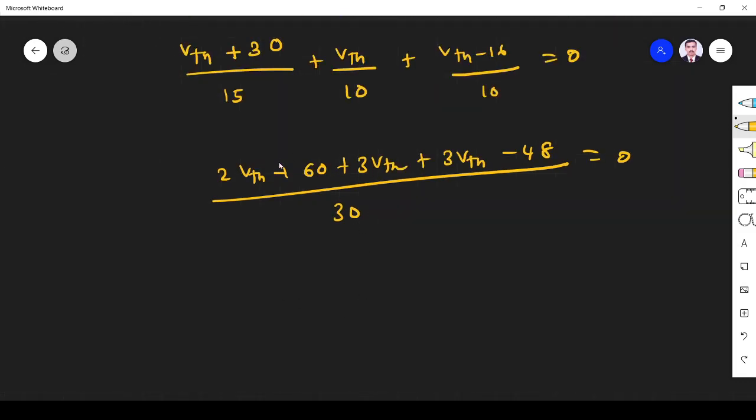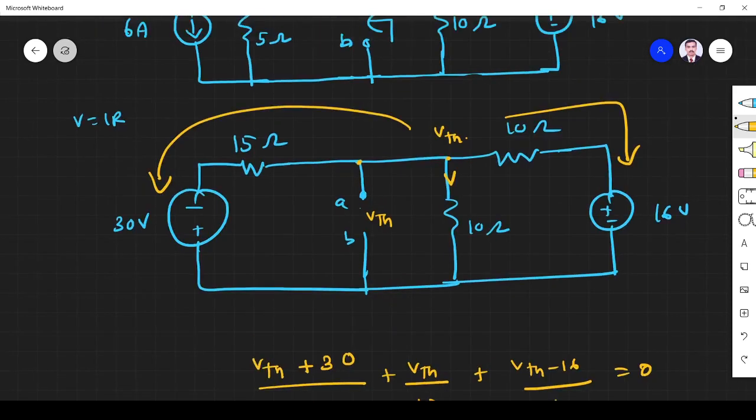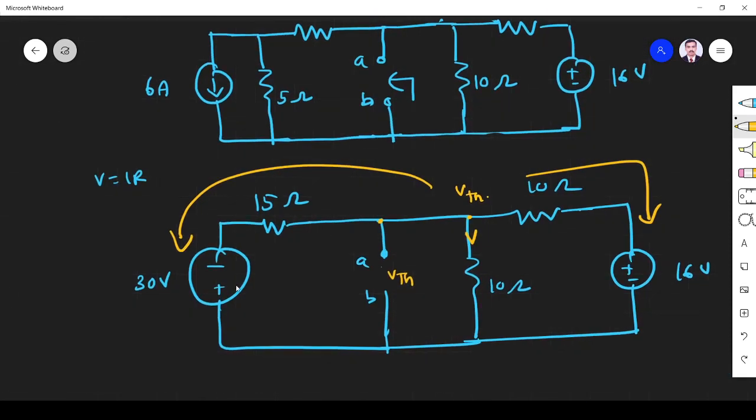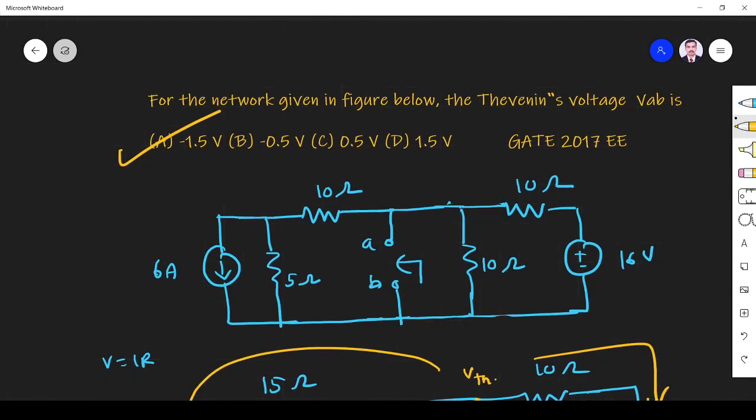If you simplify, what we get is 2 plus 3 plus 3, that's 8 V Thevenin equals minus 12. So V Thevenin equals minus 1.5 volts. Please remember the symbol - it is minus. In the equation it will be plus V Thevenin, so it is minus 1.5 volts. Option A is the right answer.